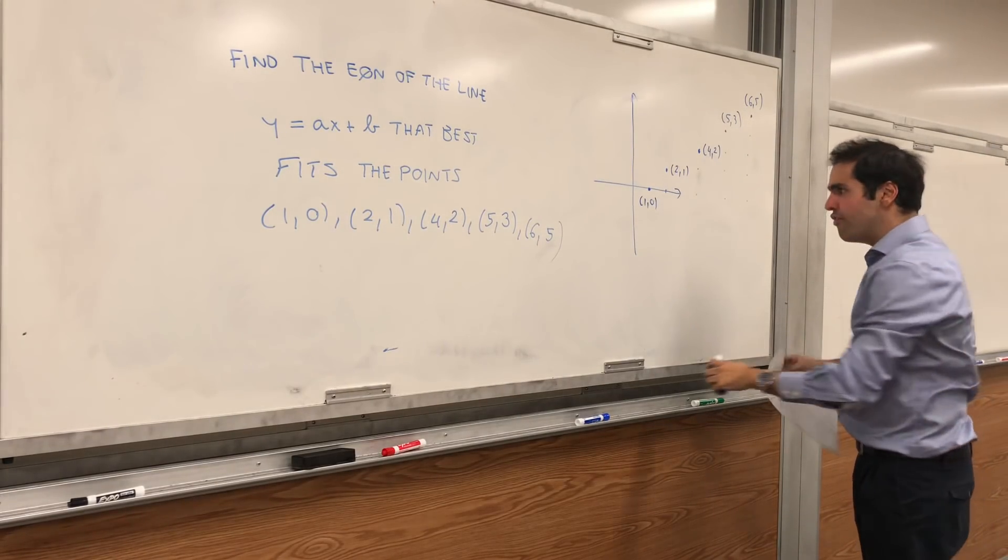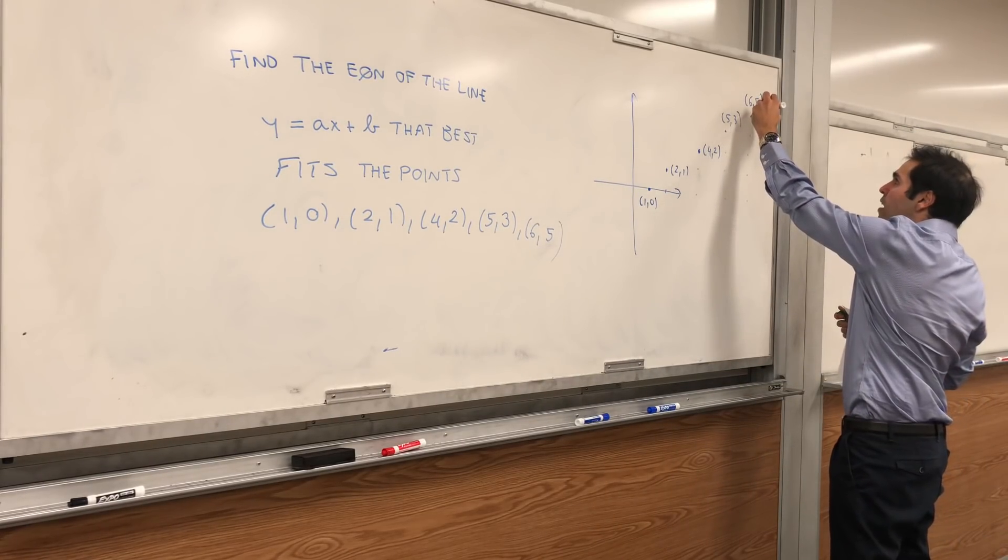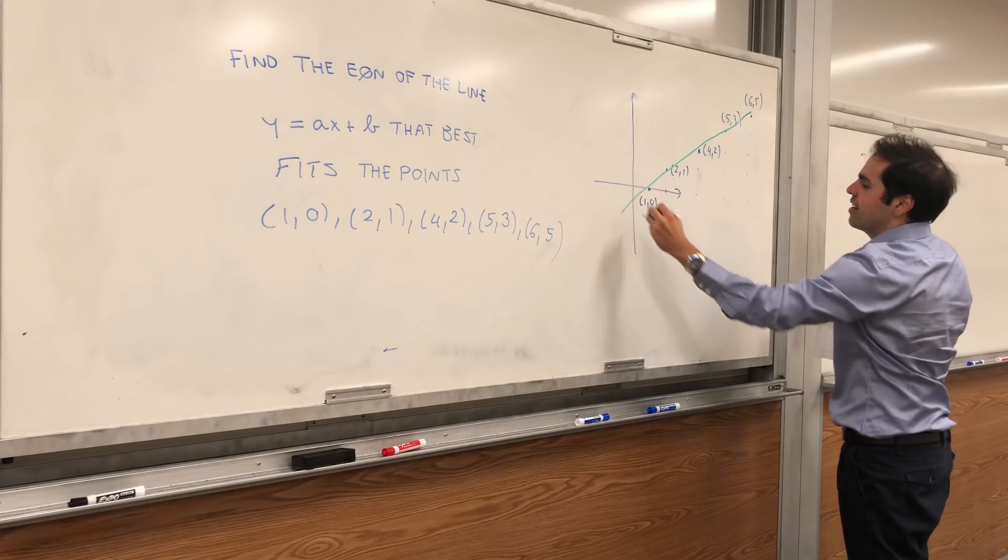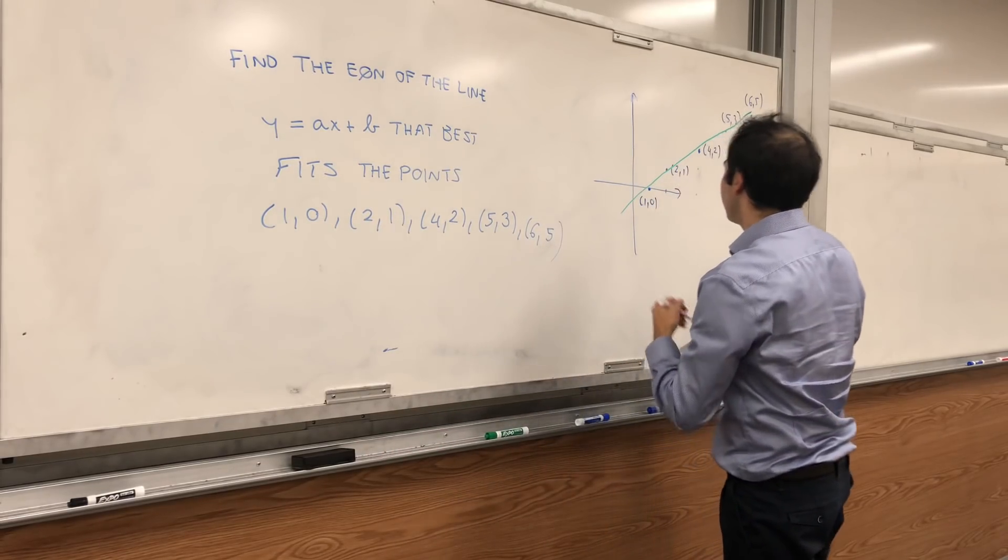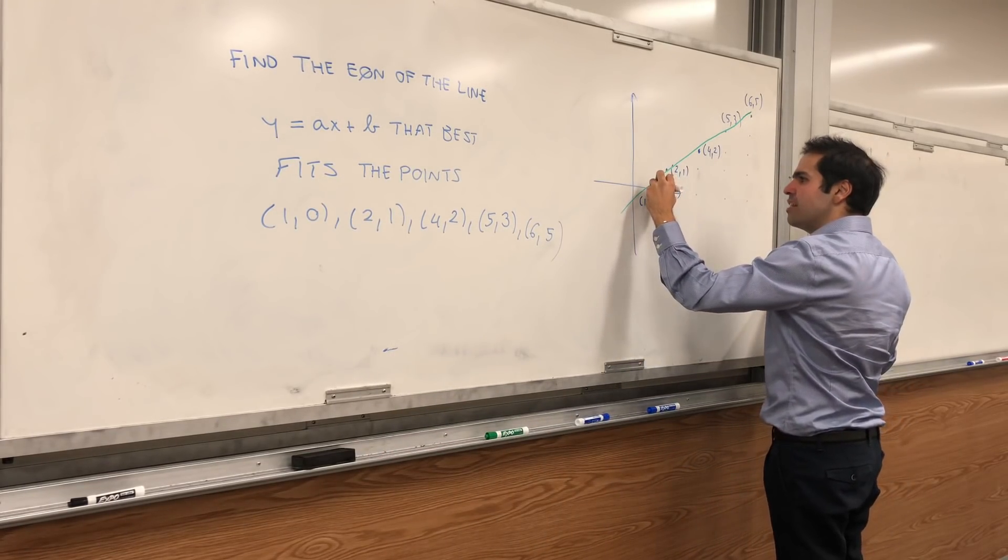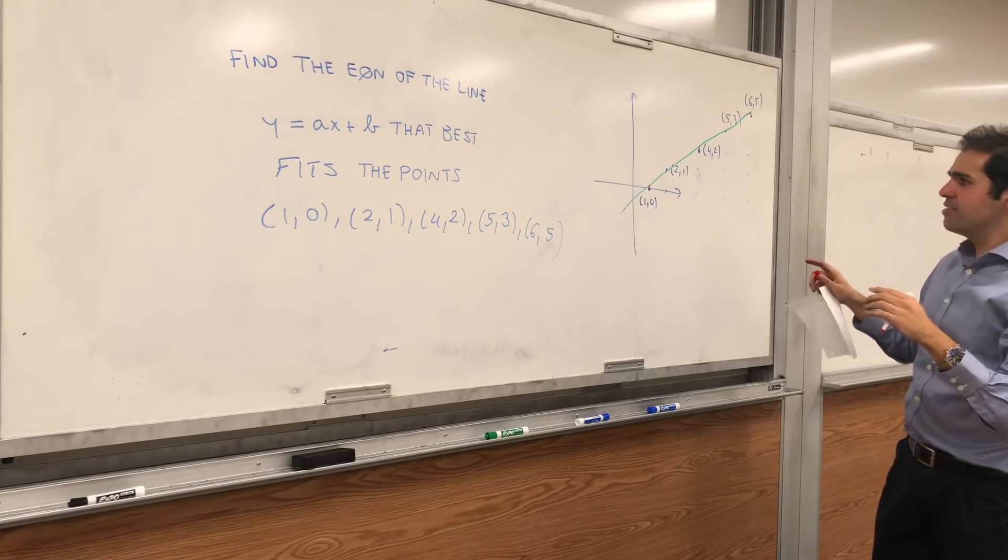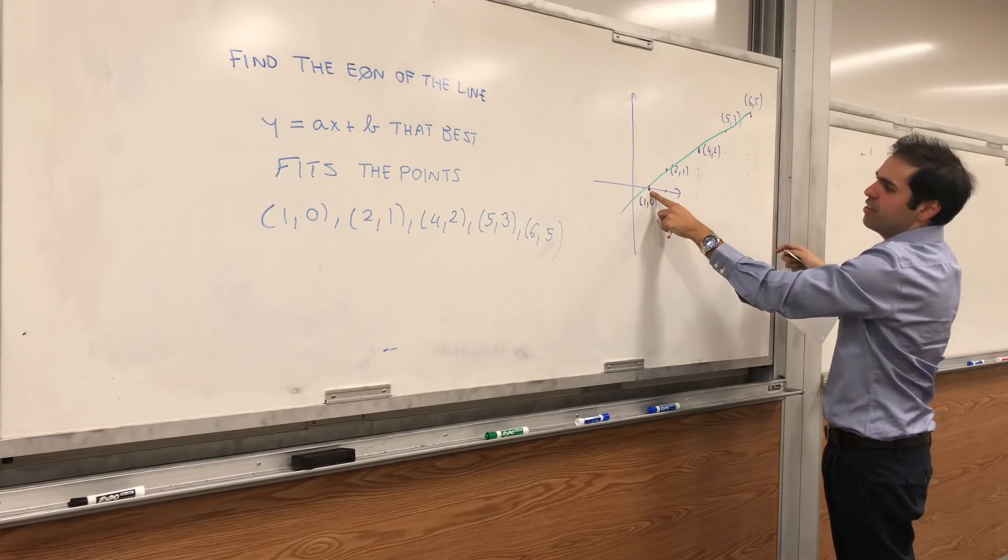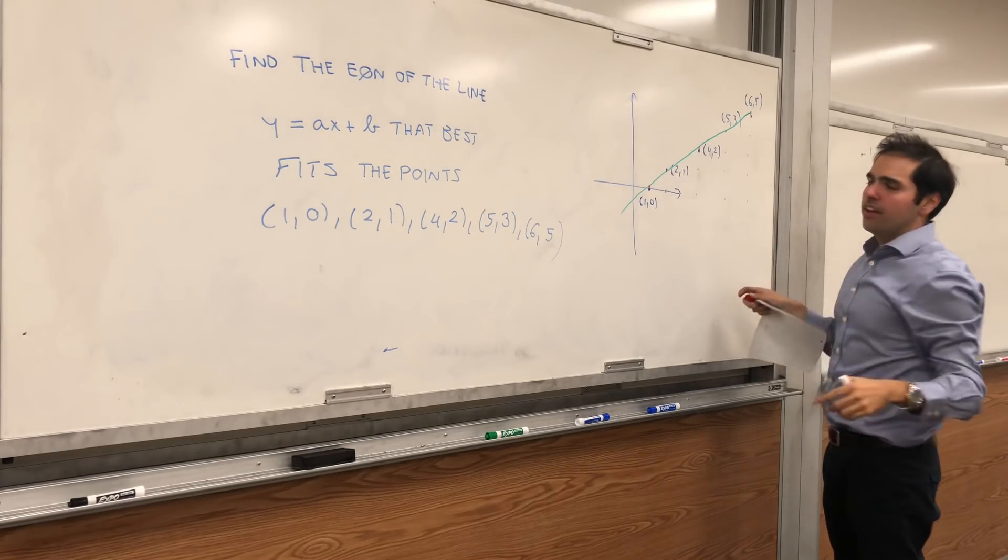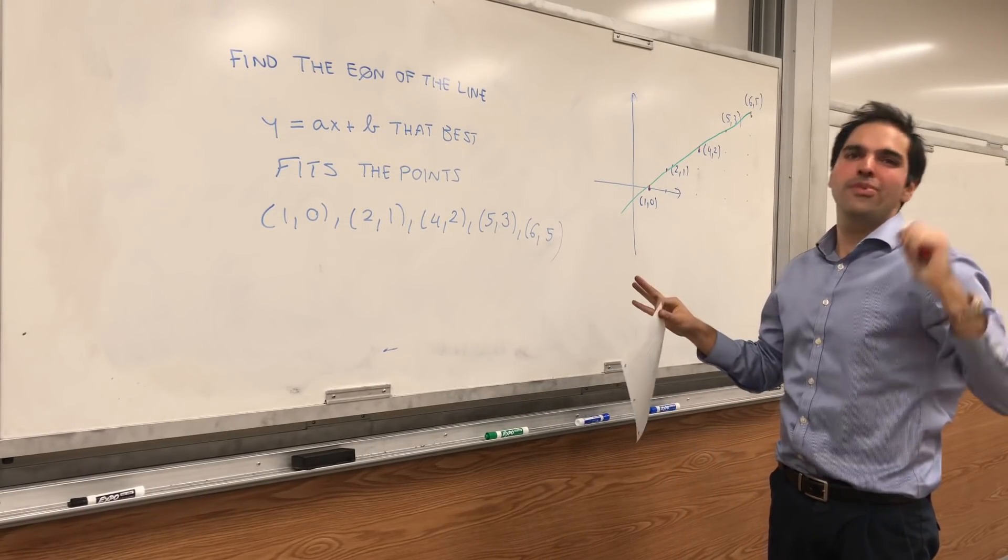Now, those points don't fit exactly a line. In fact, you can show that there's no line that goes through all those points. But it turns out there's an approximate line that fits most of the points. What I mean is, it's really the line that minimizes the sum of squares of the distance, the total distance between the points and the line. So if you think of this red thing as the errors, it minimizes the sum of squares of these errors, or what are called least squares errors.